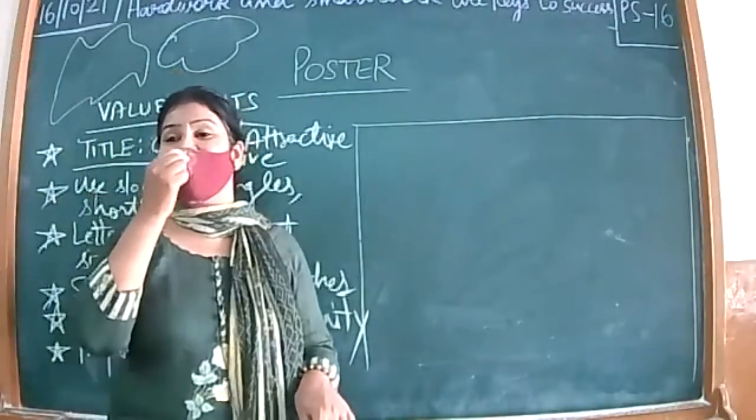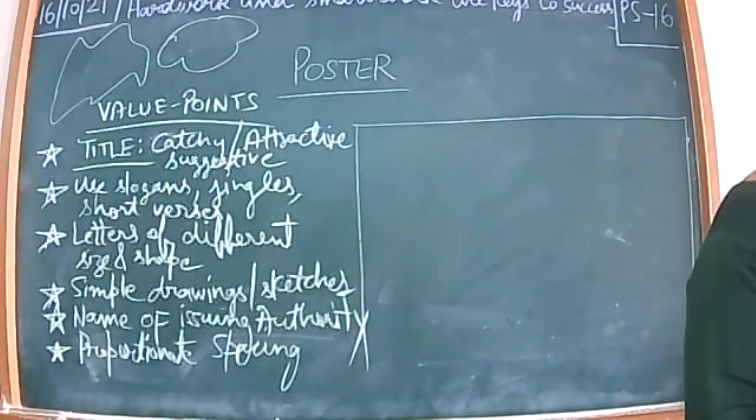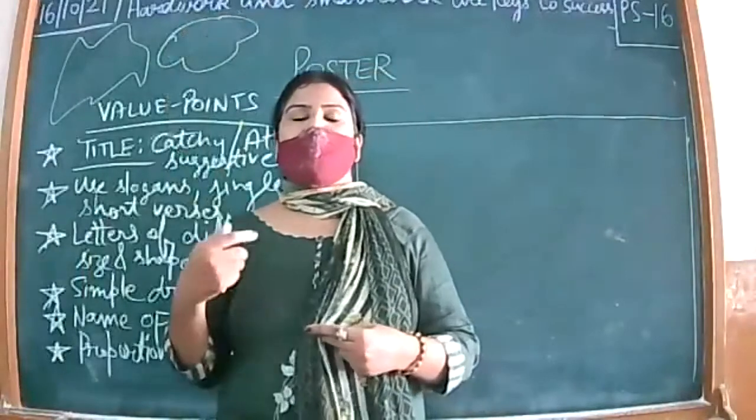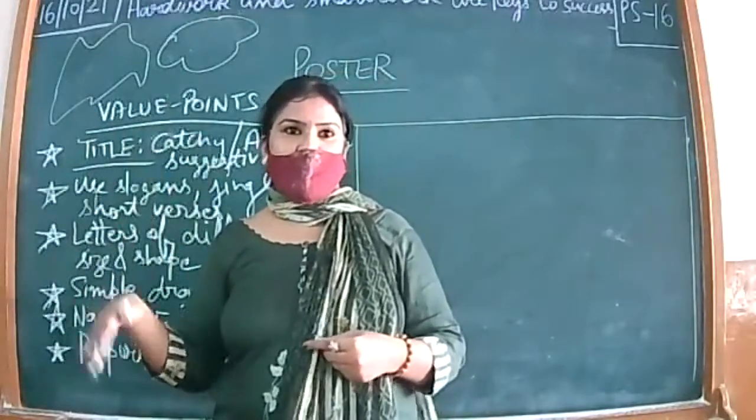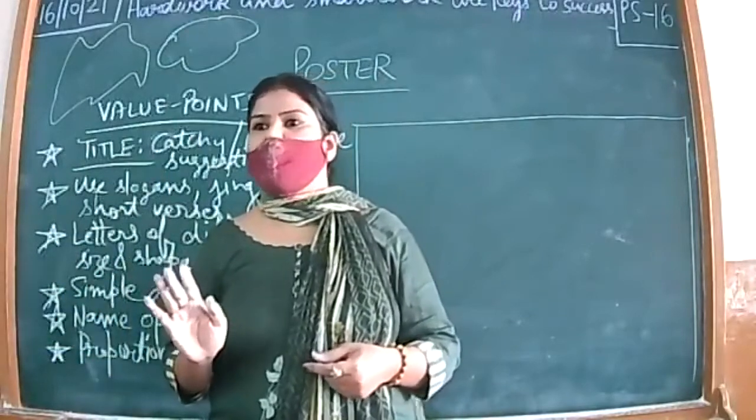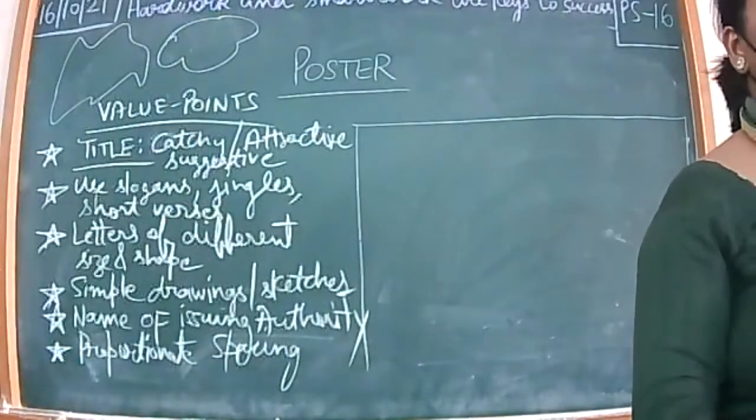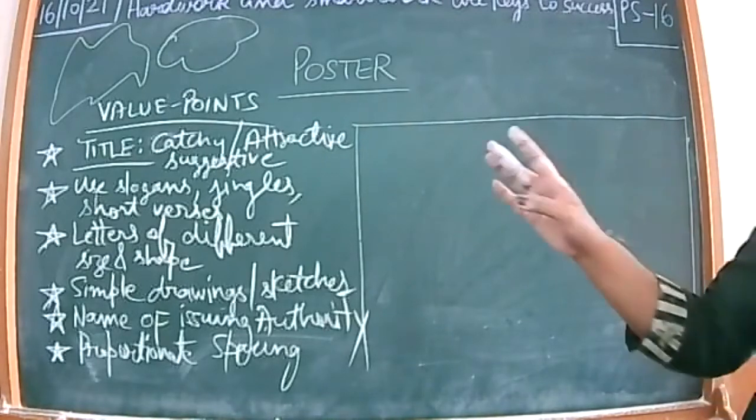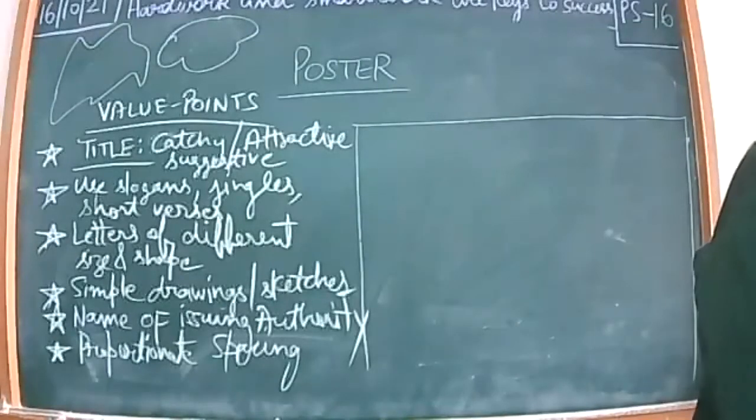You have seen in display advertisements 'Sale, Buy One Get One' - they have used bubbles and stars in which they have highlighted the content. You can use that to write your slogan or jingle. Two slogans means your work is done. Heading, your work is done. Then what is left? Your content in the form of short verses or phrases, one picture, issuing authority - everything done, very easy.